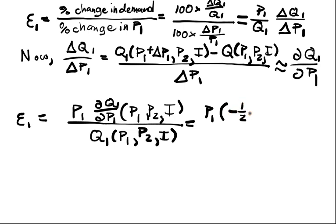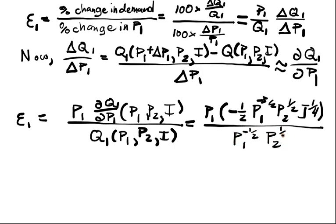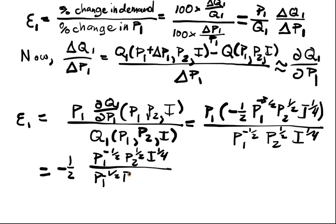So now when we take the derivative of Q1 with respect to P1, we have P1 and then we get a negative one half out. Now we have P1 to the negative three halves, P2 to the one half, I to the one quarter, divided by P1 to the negative one half, P2 to the one half, I to the one fourth, which ultimately equals negative one half.